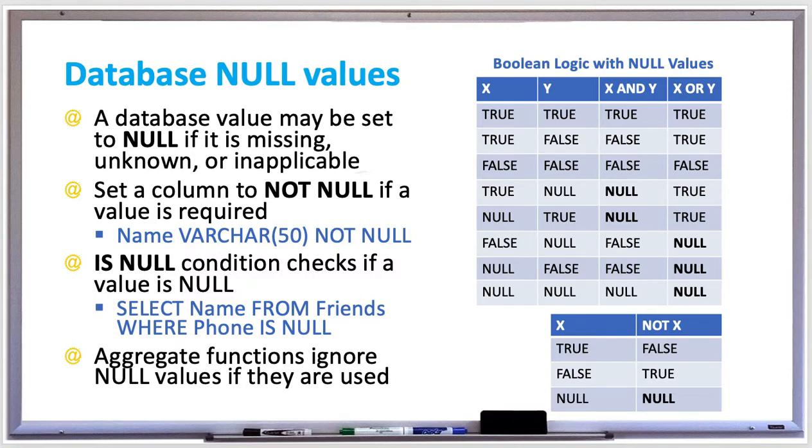Some database table columns should not be null, such as an ID column, which represents a unique identifier or a key for that row of data.